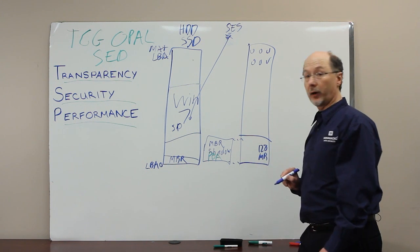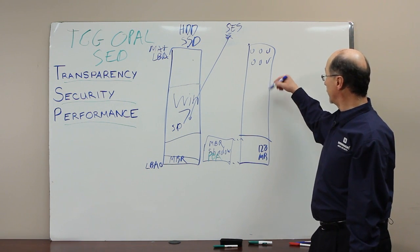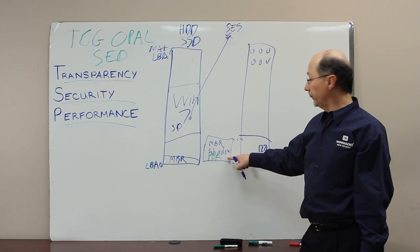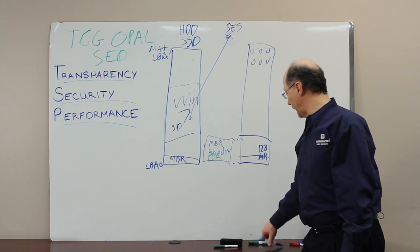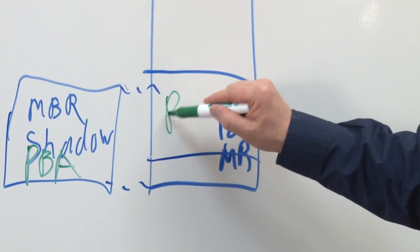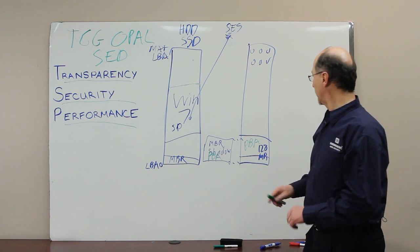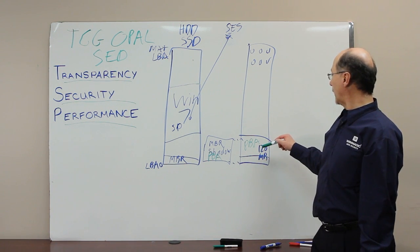Now when this computer turns on, the BIOS sees the altered MBR shadow, executes the PBA. PBA does a pre-boot authentication. It's using a password or a smart card or something. And it unlocks the drive.